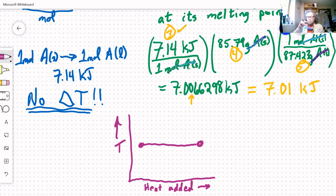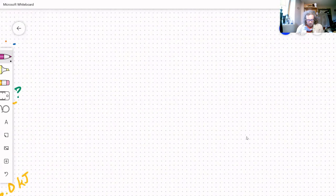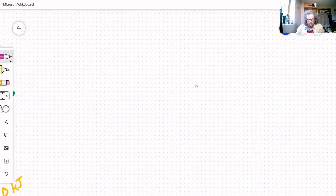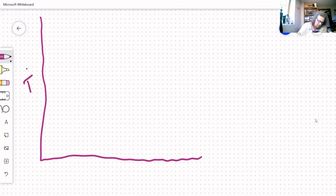Now, these are both simple one-step processes. What happens if I all of a sudden have more than one step? Well, let's look at it graphically first, and then maybe we'll look at a problem. So bigger graph, temperature, heat added.